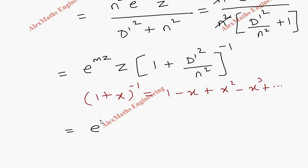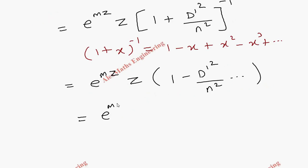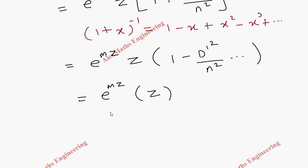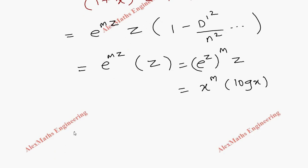We now carry the denominator to the numerator as e power mz into z times 1 plus D dash squared by n squared whole power minus 1. Since z is differentiable only once, using the expansion 1 plus x whole power minus 1 equals 1 minus x plus higher powers, all higher powers are ignored. We are left with e power mz into z times 1 minus D dash squared by n squared. Multiplying out, z times 1 is z, and D dash squared into z becomes 0, so only z remains. We now combine the result.